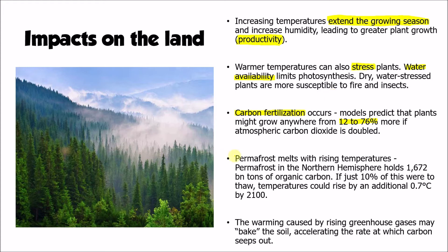One of the most notable other impacts is the melting of permafrost. As temperatures rise as a result of the enhanced greenhouse effect, the frozen soils in the far northern hemisphere — in the north of Canada and Russia — they melt, and as they melt they release the carbon they are storing. The permafrost in the northern hemisphere holds about 1,672 billion tonnes of organic carbon — that's a huge store. If just 10% of that carbon were emitted to the atmosphere, we would see an additional 0.7 degrees C rise in temperature, bearing in mind that all human-added carbon so far has only caused one degree C of warming.